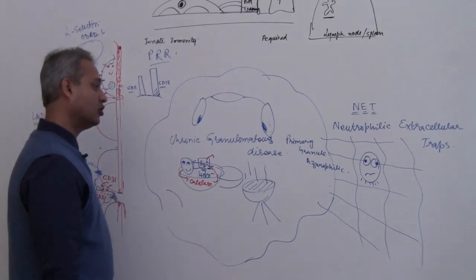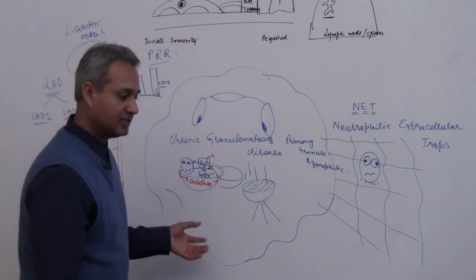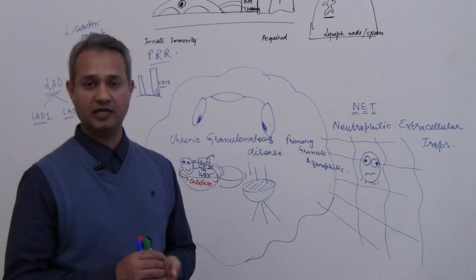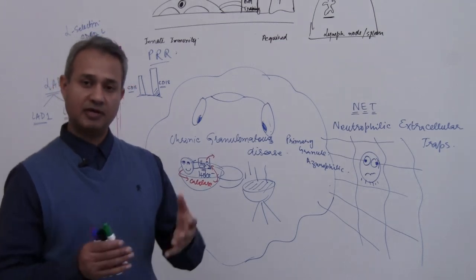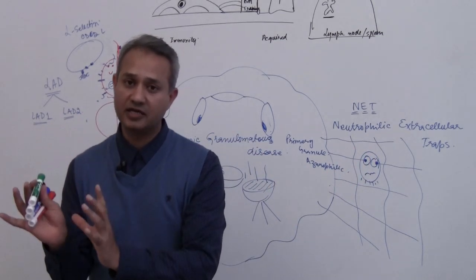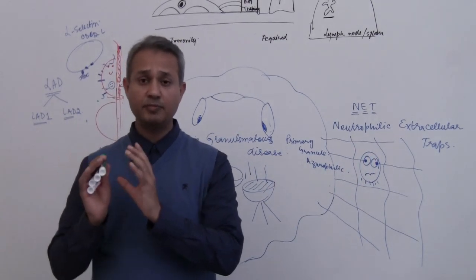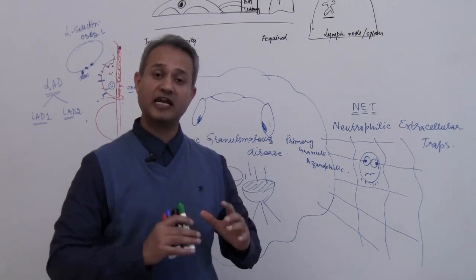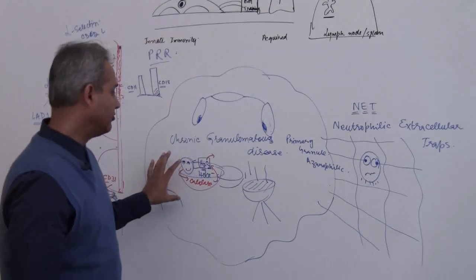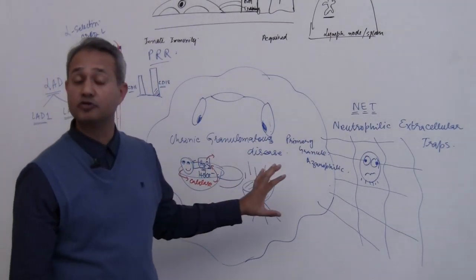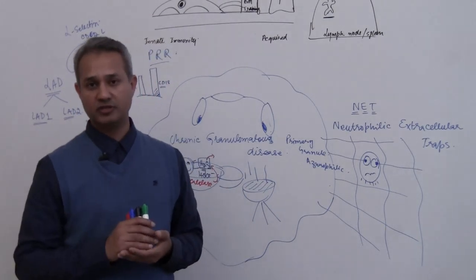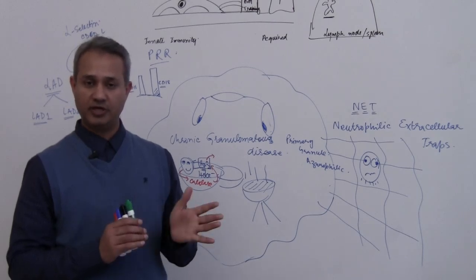Now why do we call it chronic granulomatous disease? The reason is that when the neutrophils are not able to kill the bacteria, those bacteria are now going to be handled by the macrophages. Remember the difference between macrophage function and neutrophilic function - neutrophils are pyogenic defenders. They produce pus when they're defending us. Macrophages are granulomatous defenders. They produce big granulomas when they're defending us. So now neutrophils are doing less defense and macrophages are doing more defense. So at the end of the day, we would end up with granulomas. That is called chronic granulomatous disease.